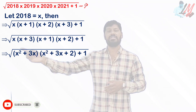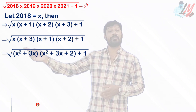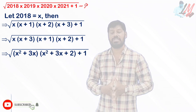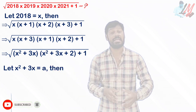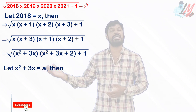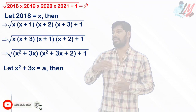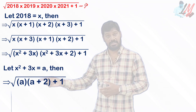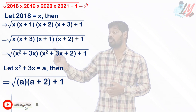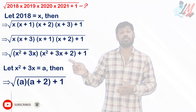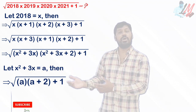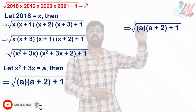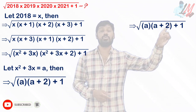Looking carefully at these two brackets, x²+3x is the common portion. So I am considering x²+3x as something A. With that substitution, the entire expression becomes the square root of A(A+2) + 1, which equals the square root of A²+2A+1.